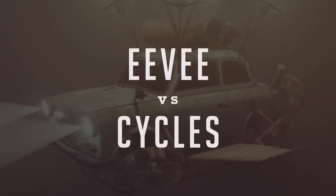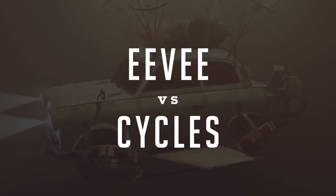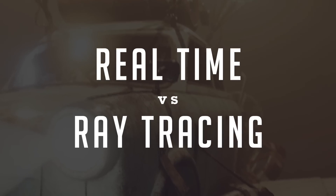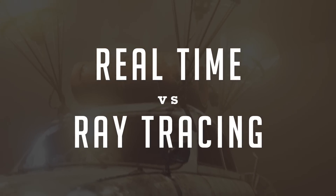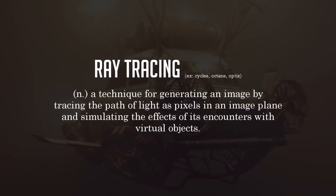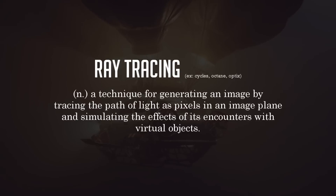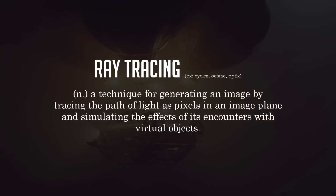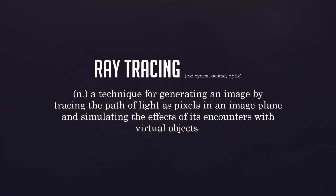We'll be taking an in-depth look at each individual factor to help you guys recognize the advantages and limitations of each engine. When it comes down to it, comparing EV and Cycles is more or less just comparing real-time engines in general and ray tracing engines in general. By definition, ray tracing is a technique for generating an image by tracing the path of light as pixels in an image plane and simulating the effects of its encounters with virtual objects.